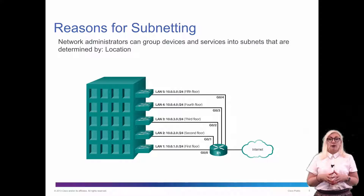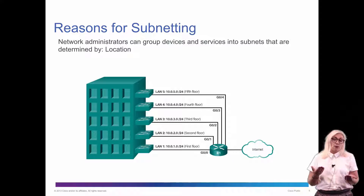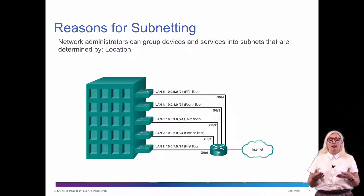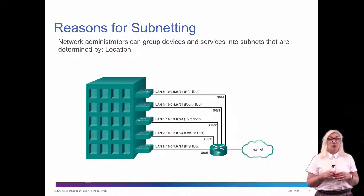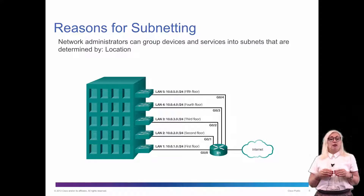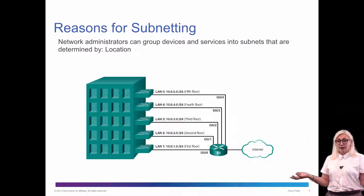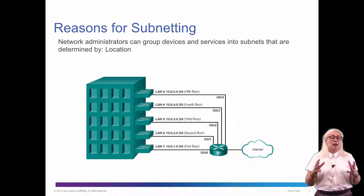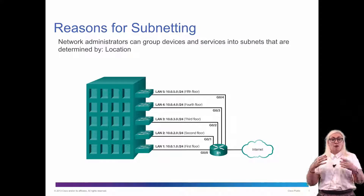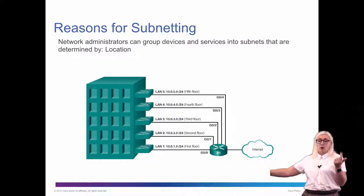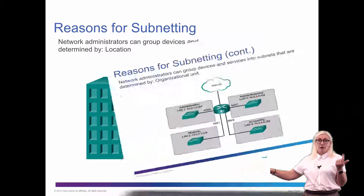There are different ways of creating subnets depending on the basis on which we create them. One way is to create a subnet according to location. For instance, in a large office building we can create a subnet for each floor. If we have different locations or different buildings, we can also make the subnets different in each building. This is one way of doing it — we divide them by location.